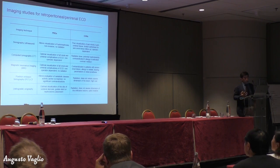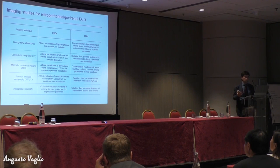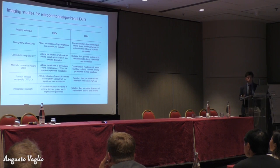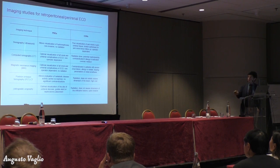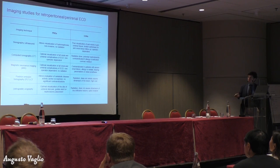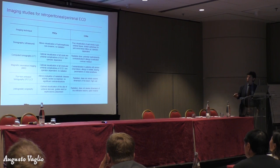A common question that patients ask is what kind of study do I have to do to image my kidneys and ureters — which is the best one? These are the main studies we use in clinical practice for imaging the abdomen: sonography, computer tomography, MRI, PET — usually combined with CT, so it's called PET-CT — and urography.